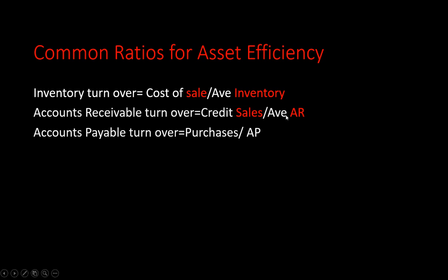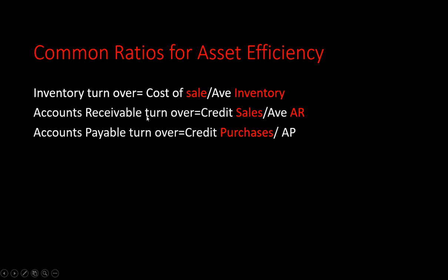The same approach applies to accounts payable: accounts payable is the denominator, and purchases are the relevant activity. Since not all purchases are on account, you use credit purchases divided by average accounts payable. Inventory turnover and accounts receivable turnover relate to assets — you want these to be as fast as possible. Accounts payable turnover relates to a liability — you want this to be as slow as possible.